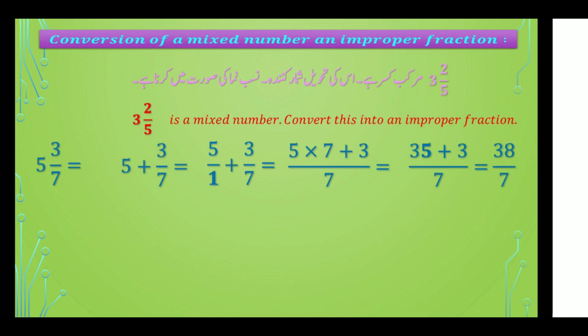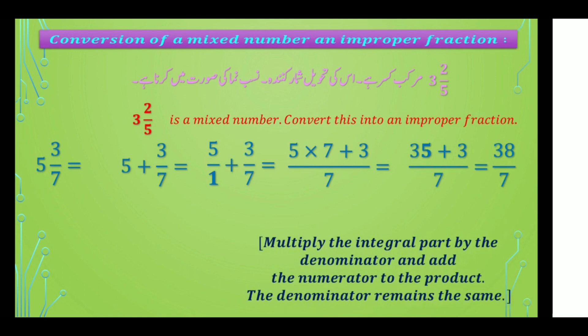اس example میں number change ہوا ہے۔ کچھ باتوں کو یاد رکھنا ضروری ہے: صحیح عددی حصے کو نصف نماز سے ضرب کرنا ہے اور حاصل ضرب میں شمار کرندہ جمع کرنا ہے — یہ غیر واجب قصر کا شمار کرندہ ہوگا اور نصف نماز وہی رہے گا۔ Multiply the integral part by the denominator and add the numerator to the product — the denominator remains the same.